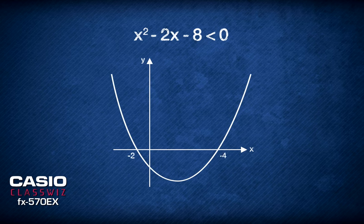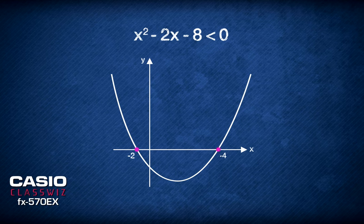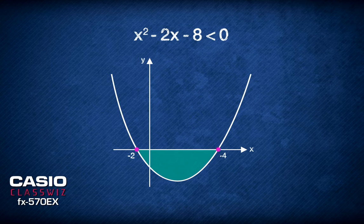This means the region of the graph required is below the x-axis, which corresponds to the region of x between negative 2 and 4. Thus, this is the range of x that satisfies the inequality.